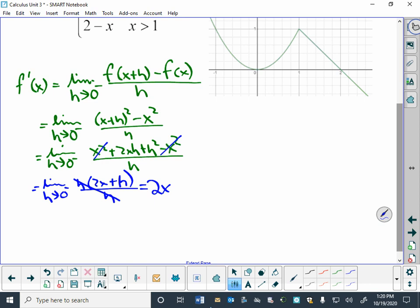And so if we wanted to know what the derivative was as we approached 1 from the left, that is going to be 2 times 1. If we were to evaluate this at x equals 1 from the left, we would get that it has a slope of 2, a derivative value of 2 to the left of 1.